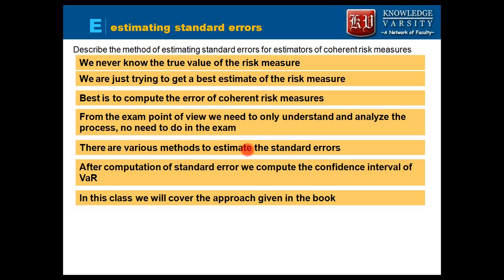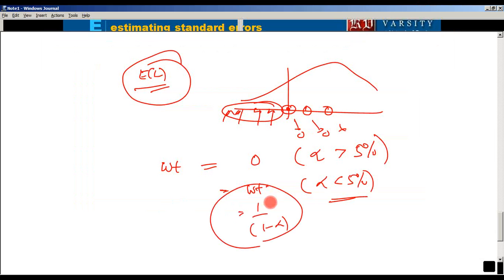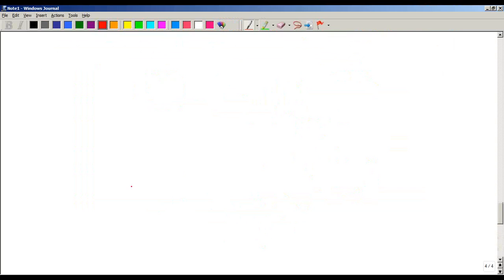There are various methods to estimate the standard error. In the book, one specific method is followed. After computing the standard error, you construct the confidence interval of the VaR. The approach given in the book says the confidence interval of VaR is: Q_hat plus or minus the standard error of Q multiplied by z_alpha.